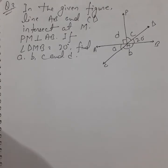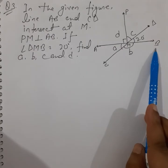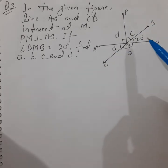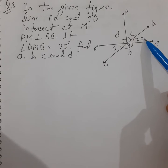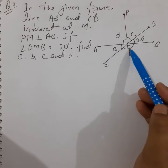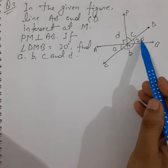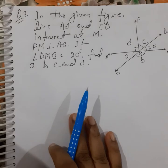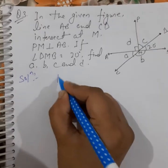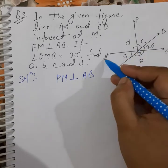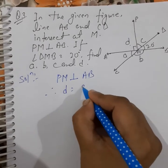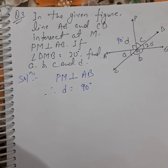The third question: in the given figure, lines AB and CD intersect at M, and PM is perpendicular to AB. If angle DMB = 20 degrees, find angles A, B, C, and D. Since PM is perpendicular to AB, angle PMB = 90 degrees. Therefore, angle D (i.e., angle PMD... wait — actually angle AMP) = 90 degrees.